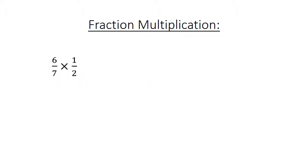Fraction multiplication. 6 over 7 times 1 over 2 equals 6 over 14. And we simplify. 3 over 7.